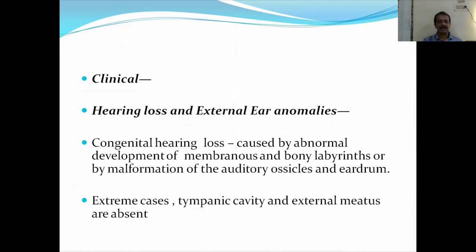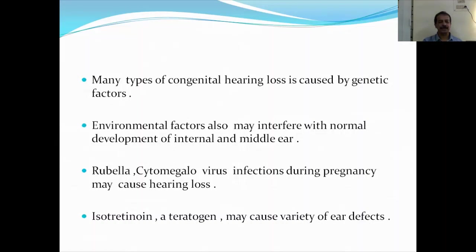The hearing loss and external ear anomalies. Congenital hearing loss is caused by abnormal development of the membranous and bony labyrinths, or by malformation of the auditory ossicles and the eardrum. In extreme cases, the tympanic cavity and external meatus may be absent. Many types of congenital hearing loss are caused by genetic factors. Environmental factors may also interfere with normal development of the internal and middle ear. Viruses like rubella and cytomegalovirus infections during pregnancy may also cause hearing loss in the newborn. A medicine known as isotretinoin — a teratogen mostly used in dermatology — can also be a cause.